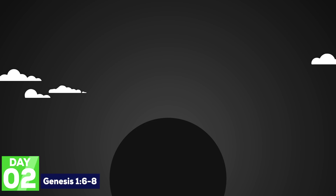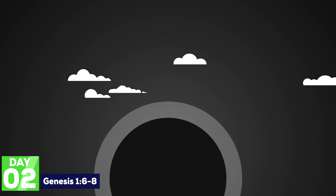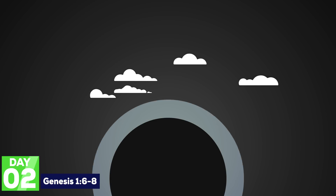God creates the sky. The sky forms a barrier between the water upon the surface and the moisture in the air. At this point, earth would have an atmosphere. This creative work occurs in one day.